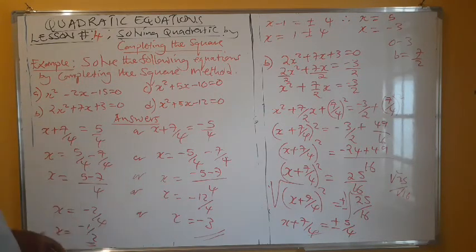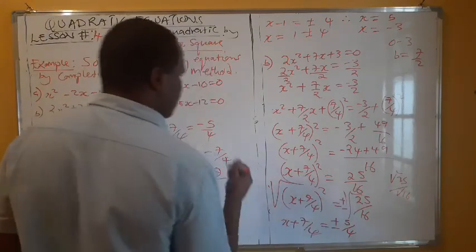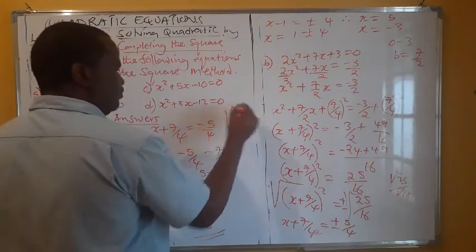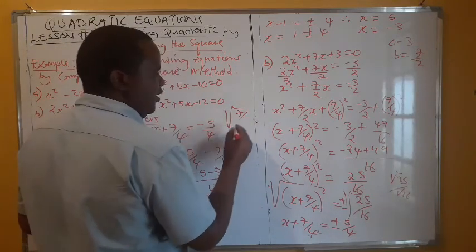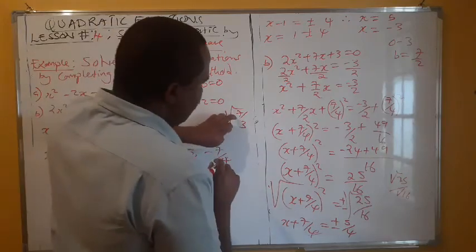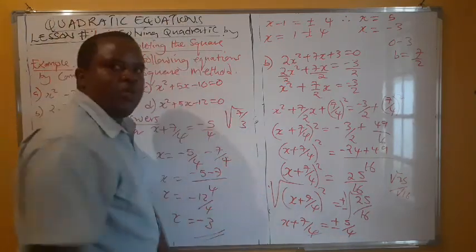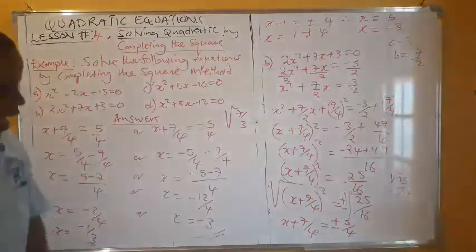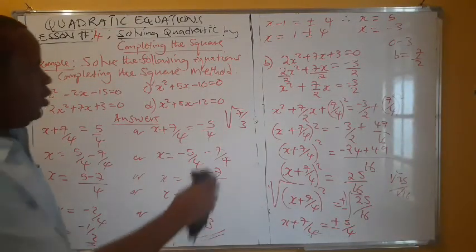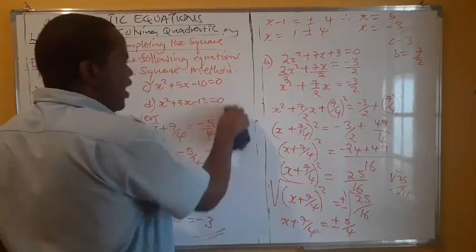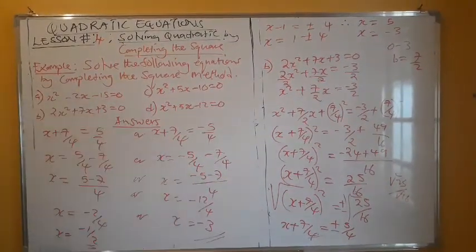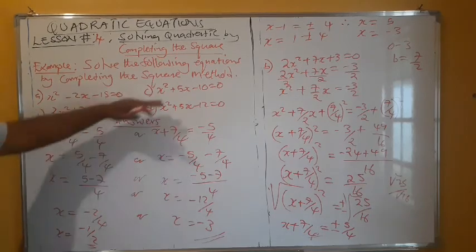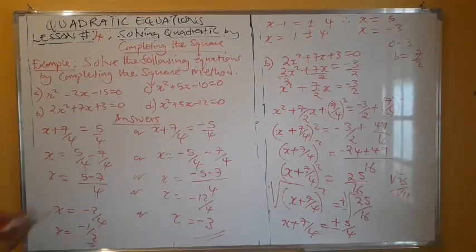What I'm trying to say is that even if there is a non-perfect square — say 7 over 3 — it doesn't matter. You can divide on your calculator and find its square root; the approach is the same. That's how you use the completing the square method. This method is the one that gave birth to the quadratic formula we use. The remaining two problems can be your exercise — please give us feedback. Thank you so much.